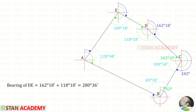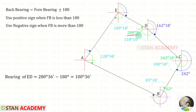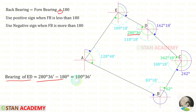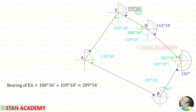Now let us find the fore bearing of DE by adding the relevant angles, giving 280 degrees 36 minutes. Since this is more than 180 degrees, the back bearing ED = 280° 36' − 180° = 100 degrees 36 minutes.